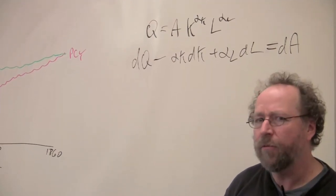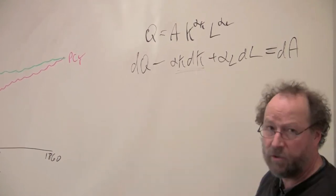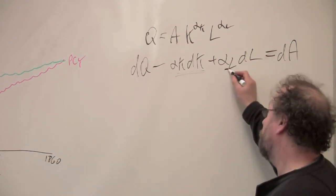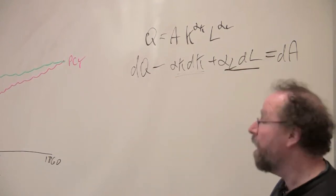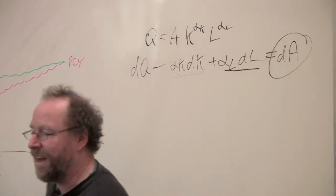What he found for American history is that while increasing amounts of capital accounted for some of the increase in output, increasing amounts of labor accounted for some, a lot was due to this, changes in technology.